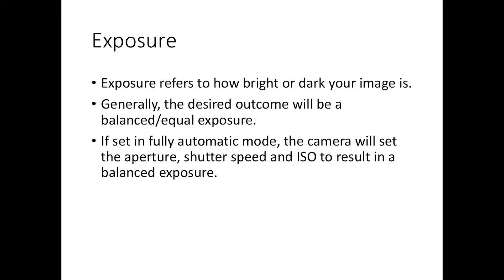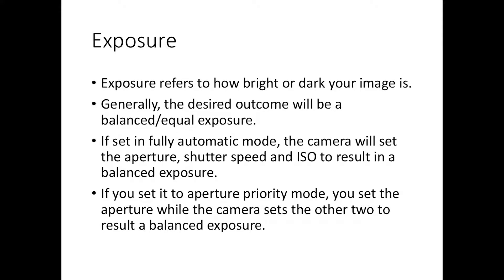If you use fully automatic mode, the camera will take care of everything for you, but we want to move away from that because the camera doesn't always know what you're taking a photo of and what effect you might need — more so with aperture and shutter speed, which are a little more creative. If you use aperture priority, you get to set the aperture, and then the camera will automatically set the shutter speed and ISO. If you use shutter priority, you set the shutter speed and the camera will calculate an aperture and ISO for a balanced exposure. These are two really useful modes to help you get out of automatic mode.